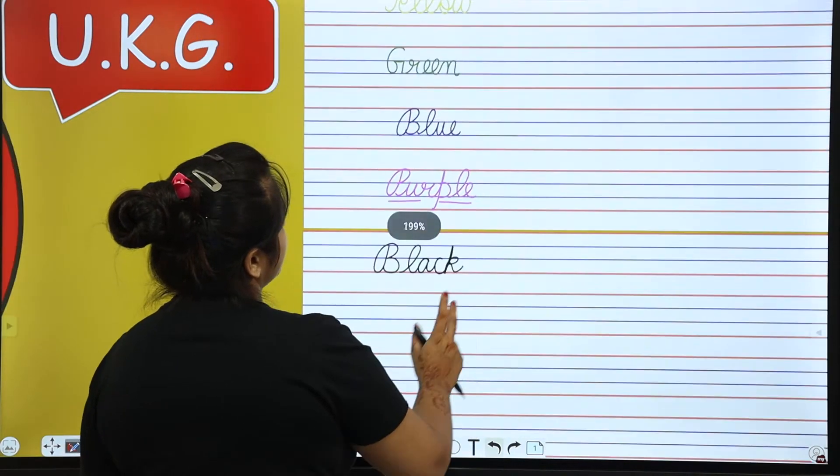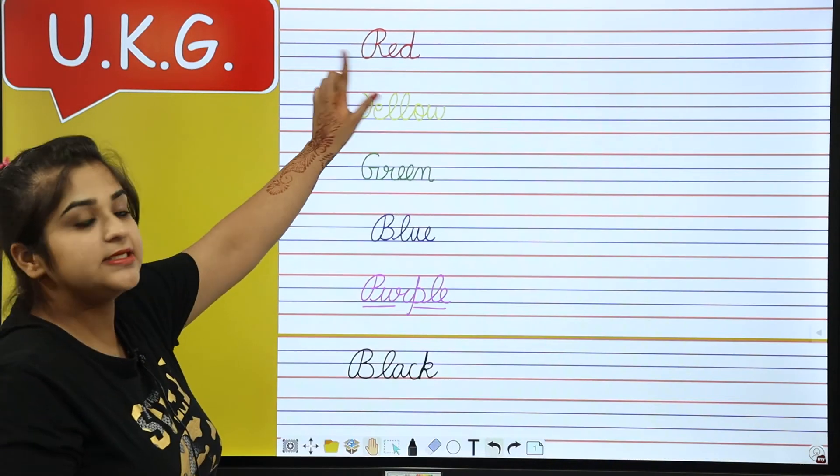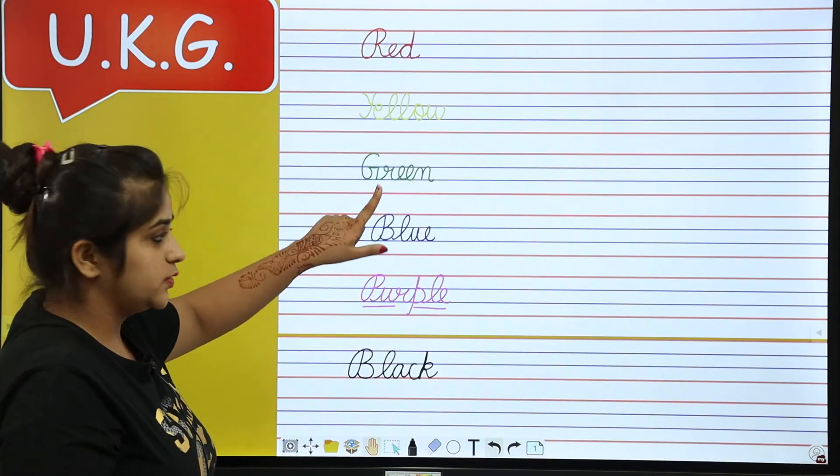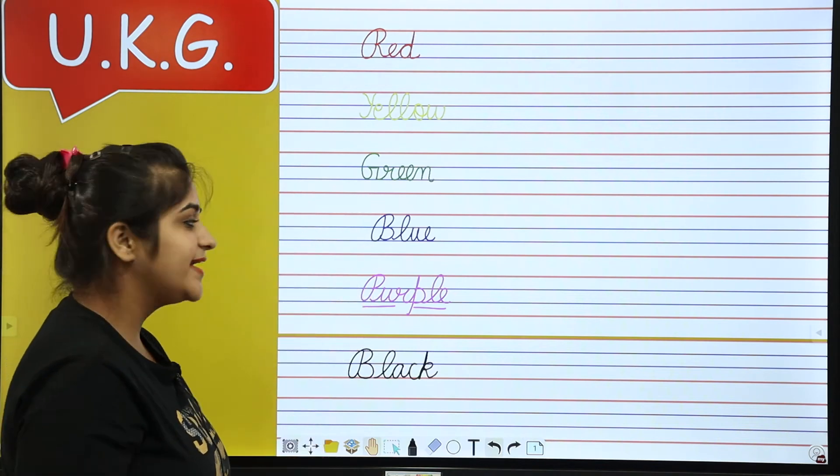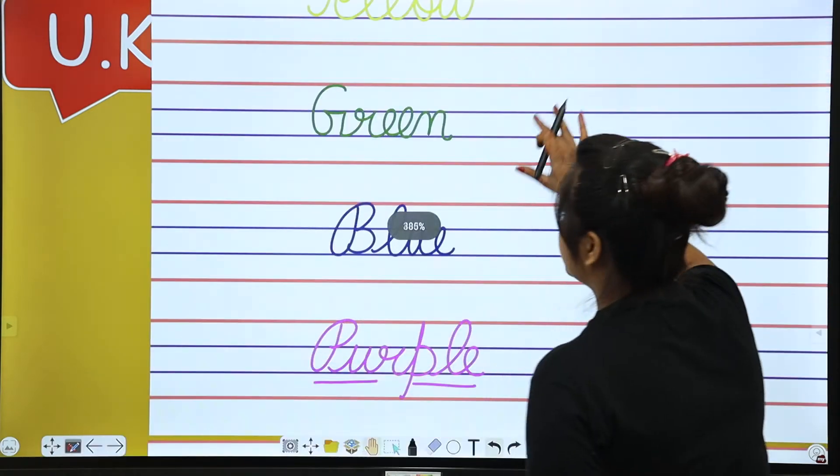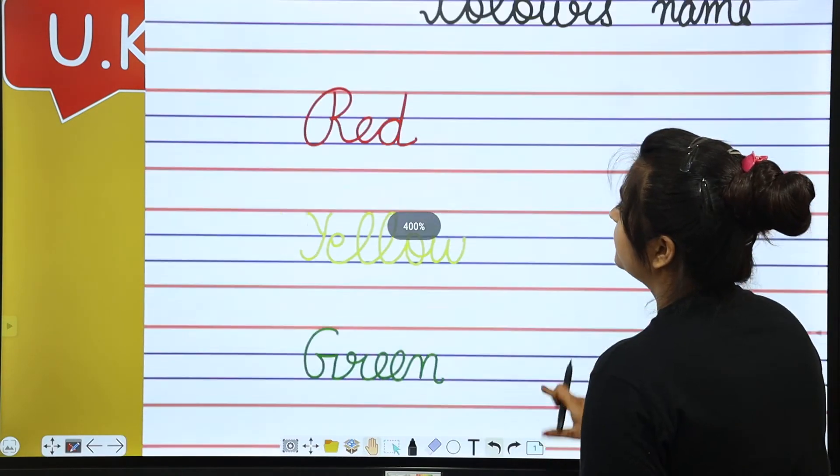Let's go, now we will remember how many colors. Red, yellow, green, blue, purple, black. Okay, now we will remember them properly.